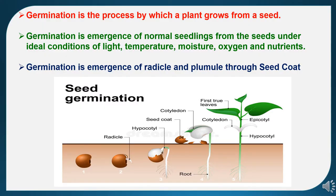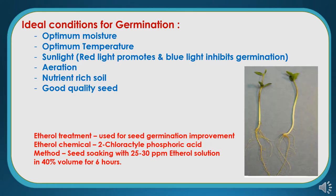Germination is the process by which a plant grows from a seed. It is the emergence of normal seedlings from seeds under ideal conditions of light, temperature, moisture, oxygen, and nutrients. Germination is the emergence of the radicle and plumule through the seed coat. After germination we can observe emergence of the radicle, hypocotyl, root development, cotyledon, rupture of the seed coat, and then true leaves.